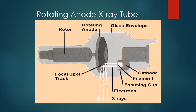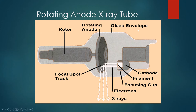The anode rotates — it's not actually necessary for creating x-rays, but rotation prolongs the life of the equipment and makes for more efficient x-ray creation. It has a rotor powered by electromagnetic induction, similar to the motors in an electric car. All of this action inside the glass envelope is done inside a vacuum, meaning all of the atmosphere has been removed from the inside of the envelope.